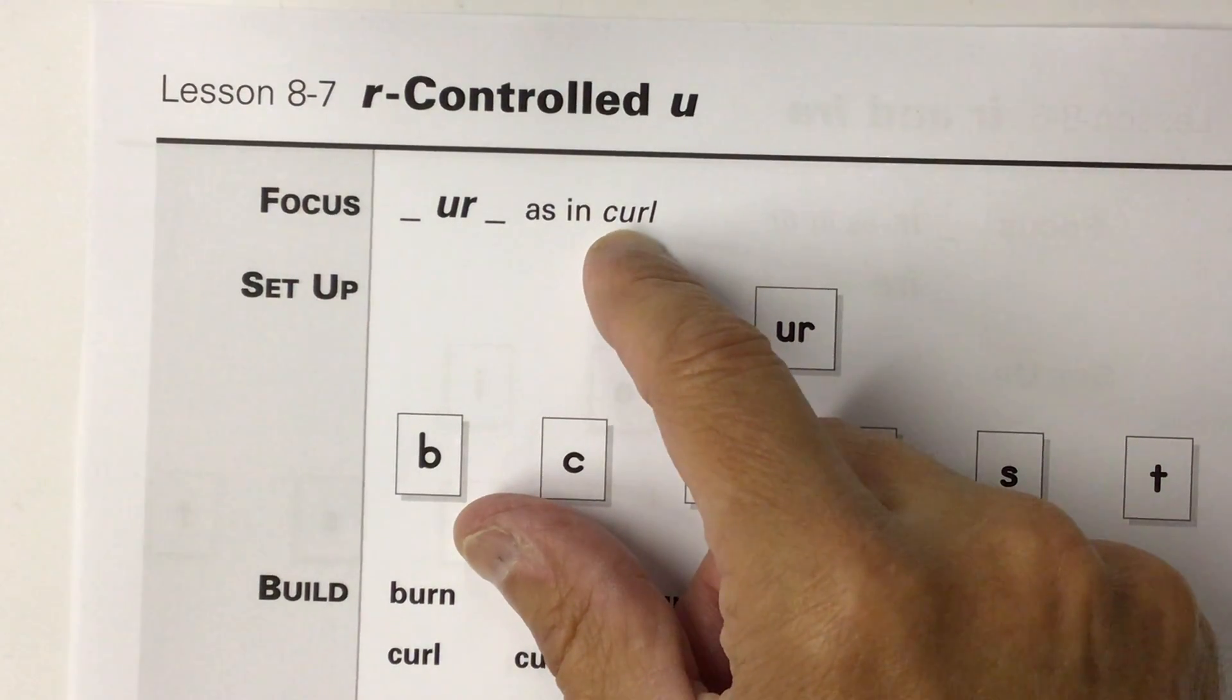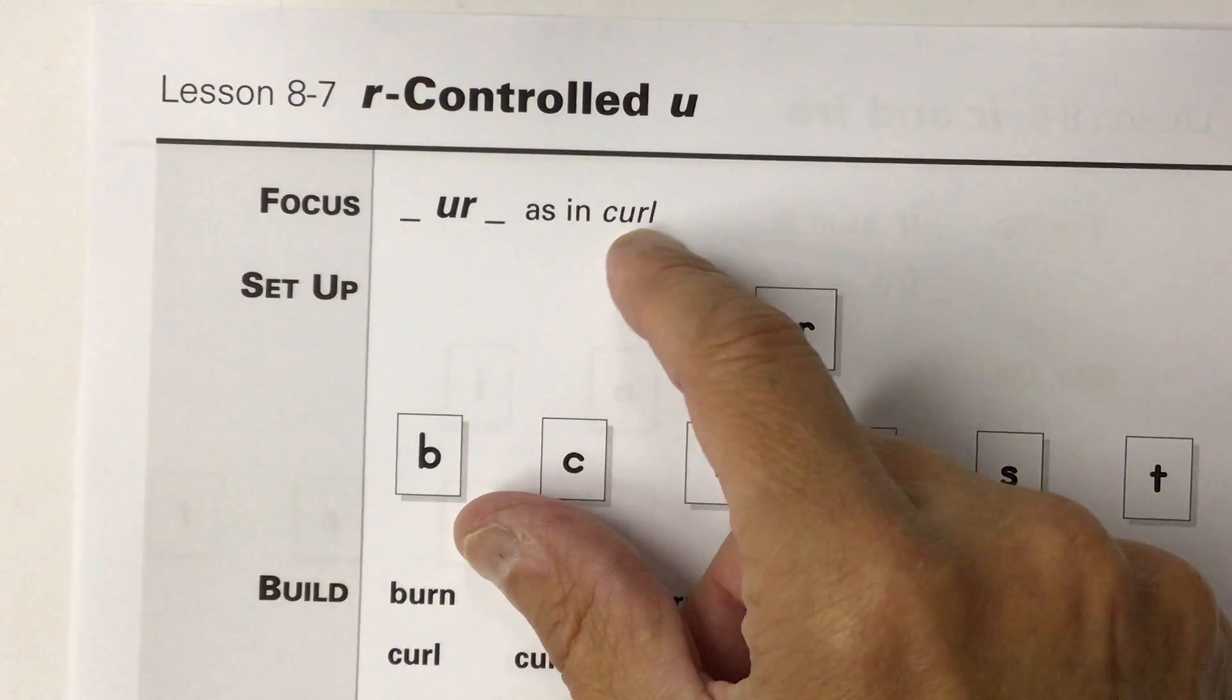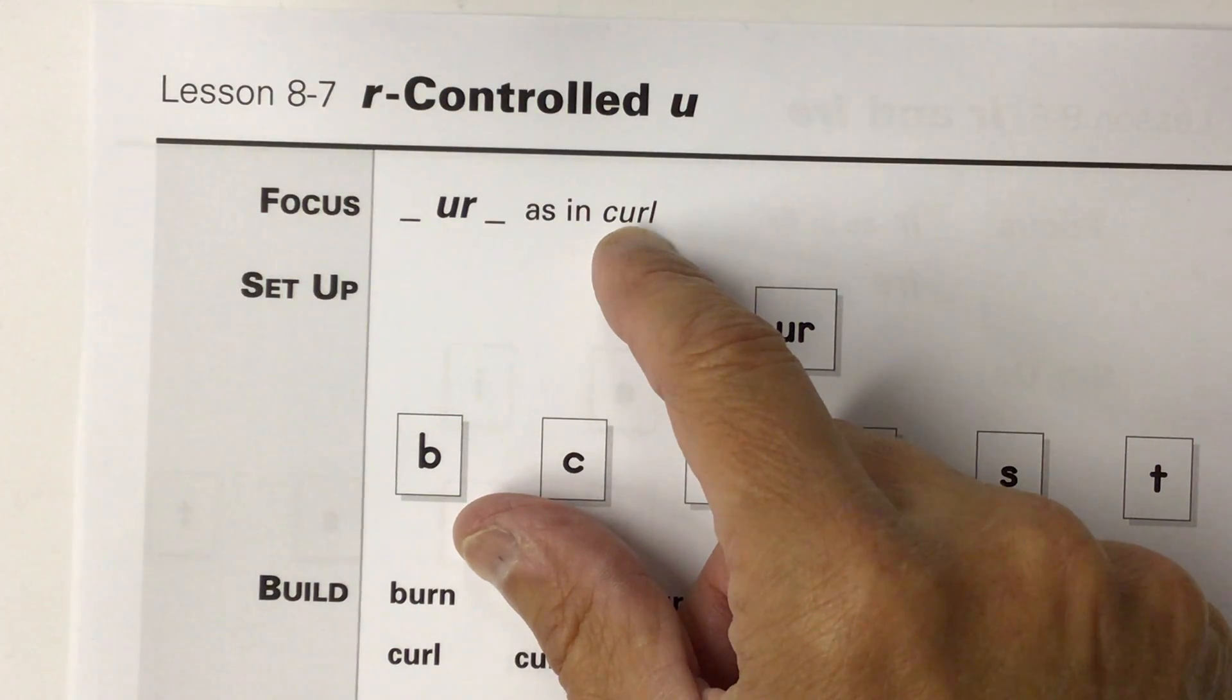As in the word curl. This is the word curl. Notice that the U-R just says er. You don't say uh for the U. You don't say U for the U. That R controls the U and just makes it sound like this.